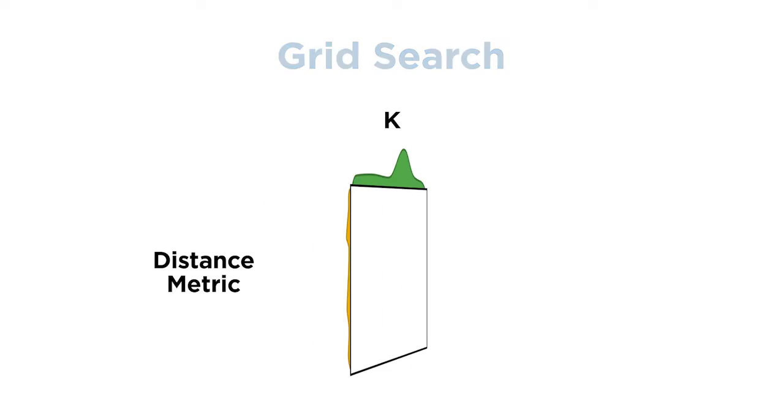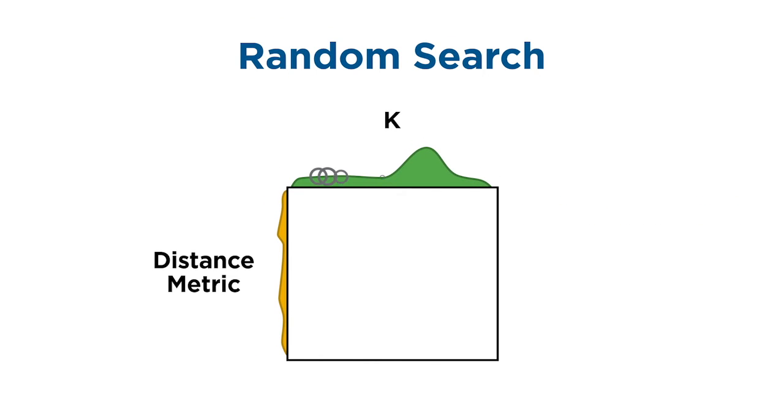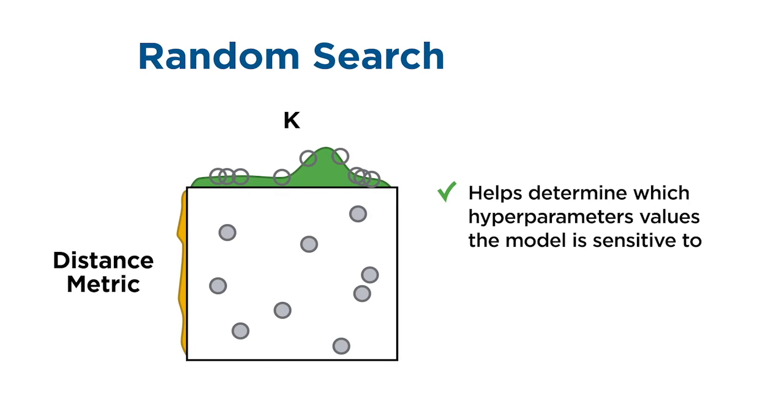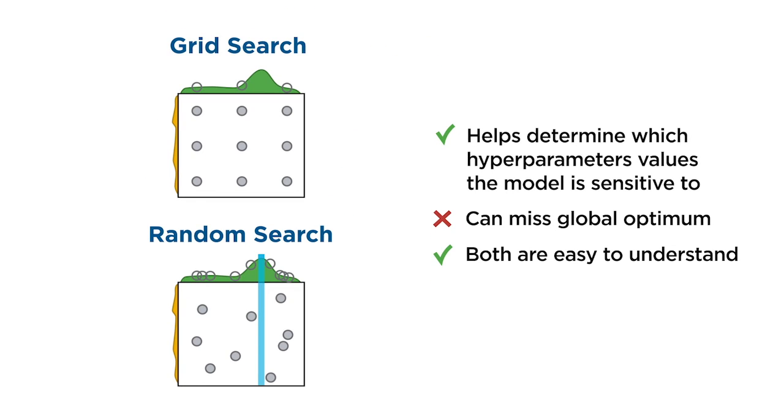You could also use an approach called random search. As the name suggests, combinations of hyperparameter values are sampled randomly. As a result, not all of the hyperparameter values are tried. This helps because it can be difficult to determine in advance which hyperparameter values the model is sensitive to. However, random search can still miss the global optimum. And although grid search and random search are easy to understand, they are inefficient.